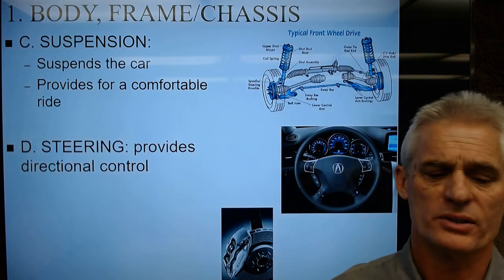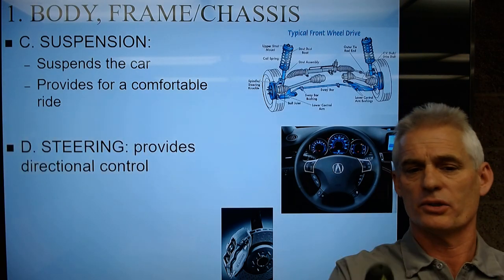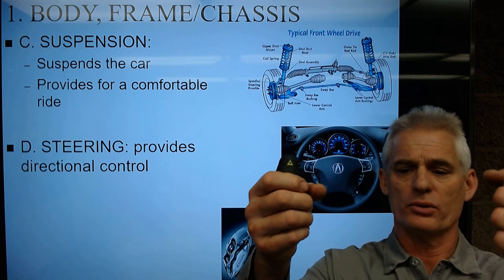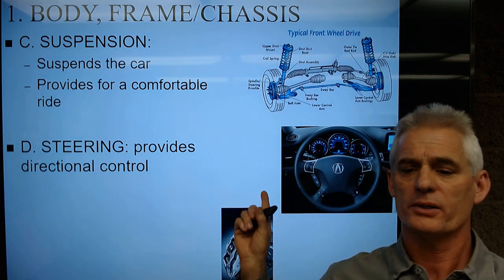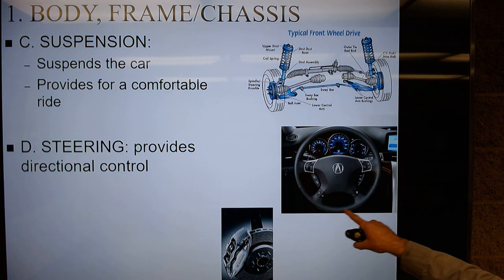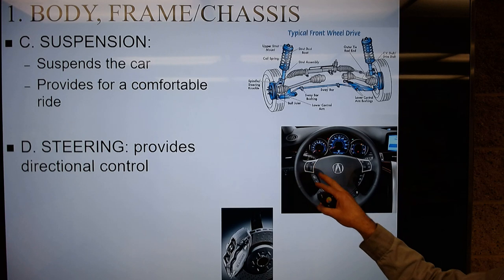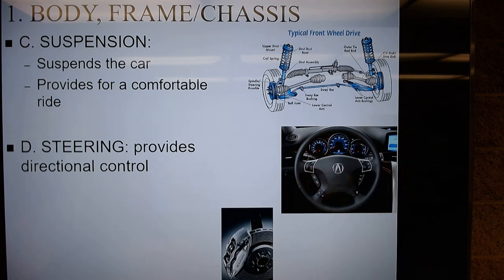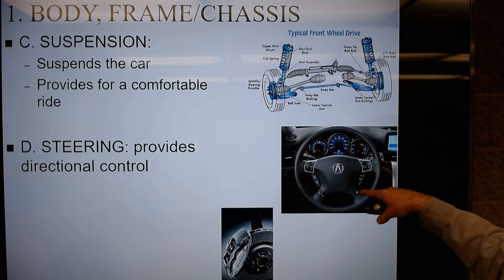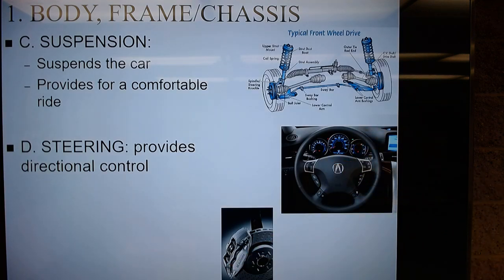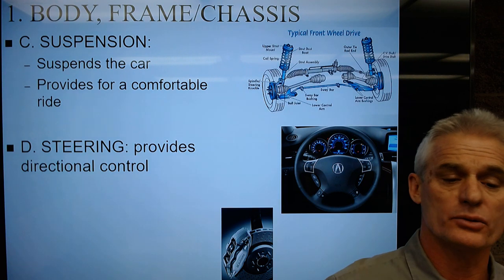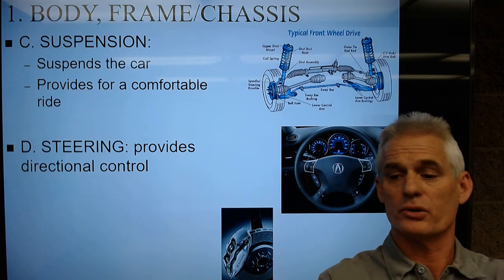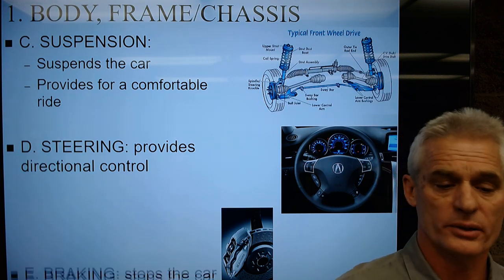Then we have a steering system that gives you as a driver the ability to provide directional control. This Acura steering wheel has all kinds of controls — cruise control, stereo controls, and other media controls. This steering wheel gives you the driver directional control — you point the car where it's going to go.